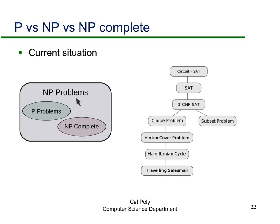Here's our current situation: we have NP problems, P problems, and NP-complete problems. The NP-complete set is distinct from P because these are problems for which we have no polynomial time solutions. The wide range of NP-complete problems comes from problem reductions: starting from circuit satisfiability, which links all decision problems to an algorithm that solves the problem, we go to satisfiability, then to 3-SAT, and from there reduce to subset sum, clique, vertex cover, Hamiltonian cycle, traveling salesperson, and many more.